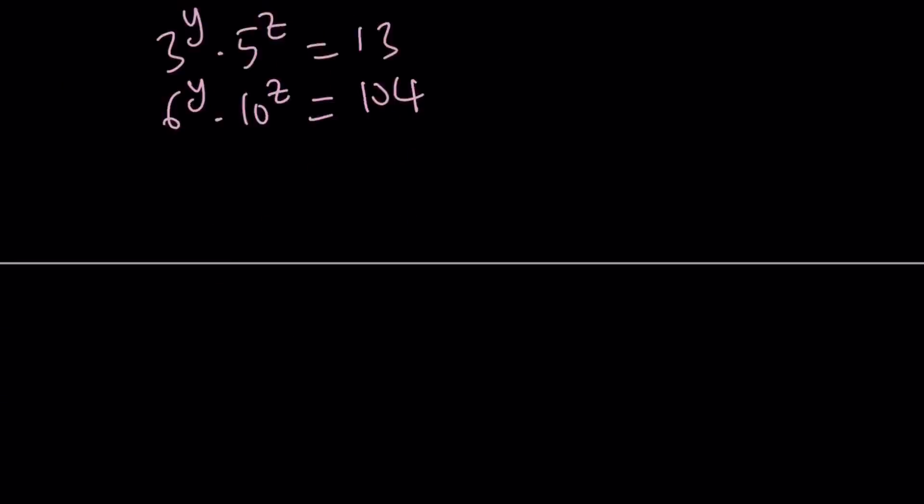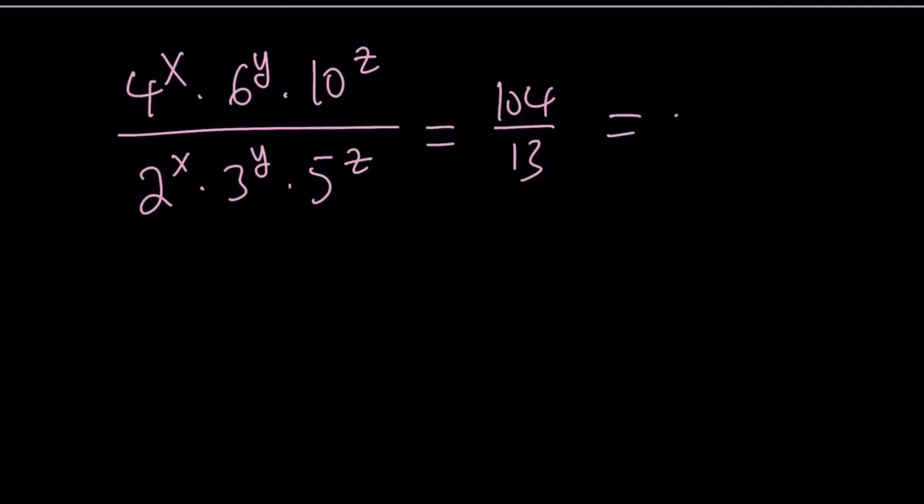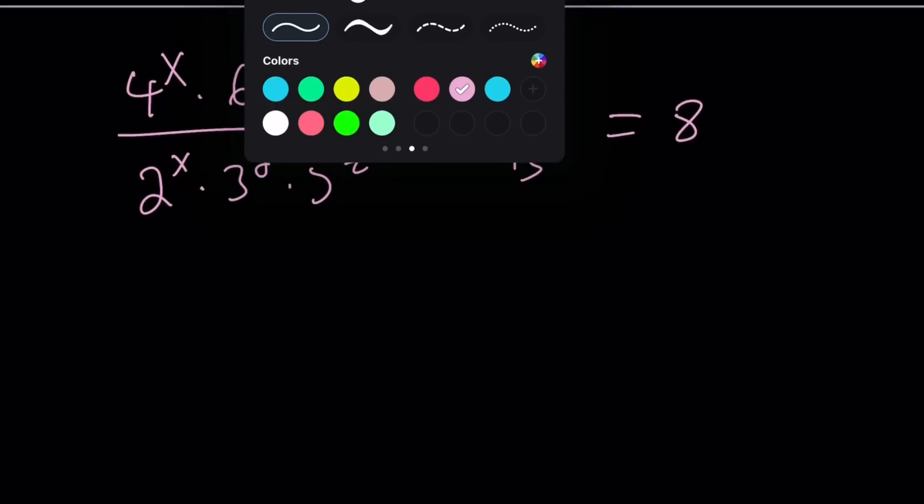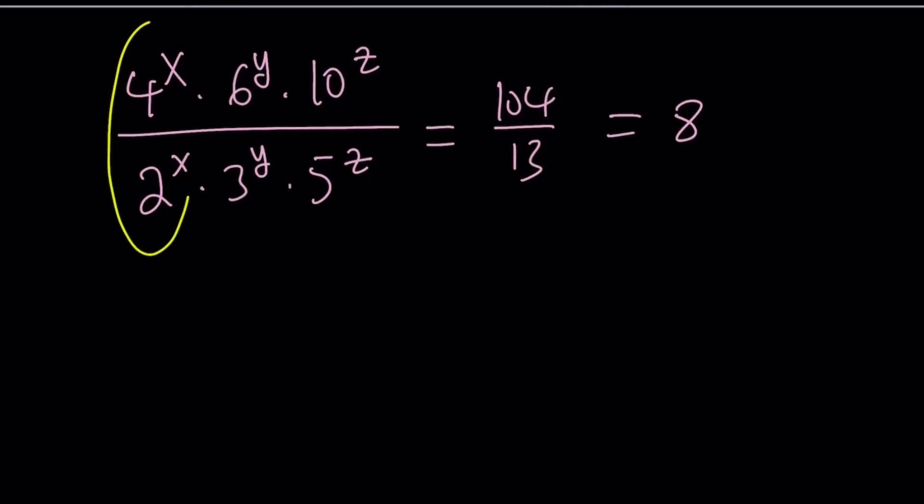So I'm going to go ahead and divide 4 to the x times 6 to the y times 10 to the z by 2 to the x times 3 to the power y times 5 to the power z. And 104 divided by 13 is going to give me 8. Make sense? Okay. So from here, we can basically divide these two and then these two because they have the same exponents. So we can kind of group them and divide like that.